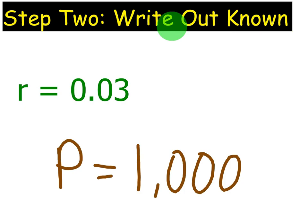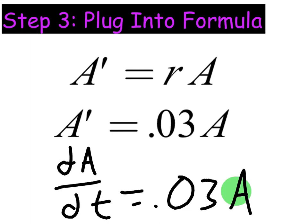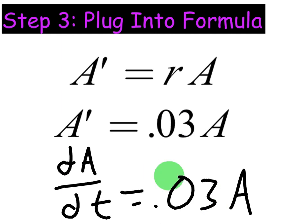Next, we're going to write out what we know. The interest rate is 0.03 and the initial principal amount was $1,000 in the account. Finally, we're going to plug into the formula, substituting 0.03 in for r. That's really all this example requires — knowing the formula for the rate at which the amount in the account is changing and then plugging in 0.03 for r.